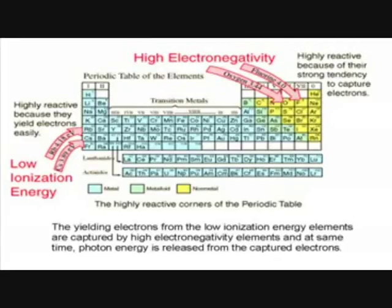The yielding electrons from the low ionization energy elements are captured by high electronegativity elements, and at the same time, photon energy is released from the captured electrons.